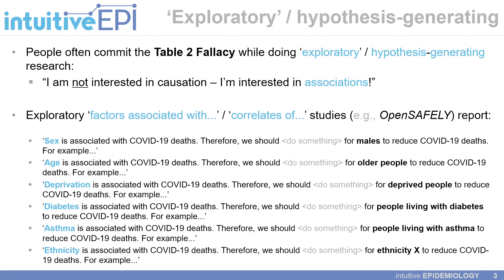For example, sex might be associated with an outcome such as COVID-19 death, and often you see a recommendation that something should be done for males to reduce the occurrence of the outcome, and particular recommendations for physicians or policymakers are then given. The same sort of idea can be seen for associations between risk factors or exposures such as age, deprivation, diabetes, and asthma, along with particular ethnicities, which are reported in the abstract of the OpenSAFELY paper discussed at length in Part 2.